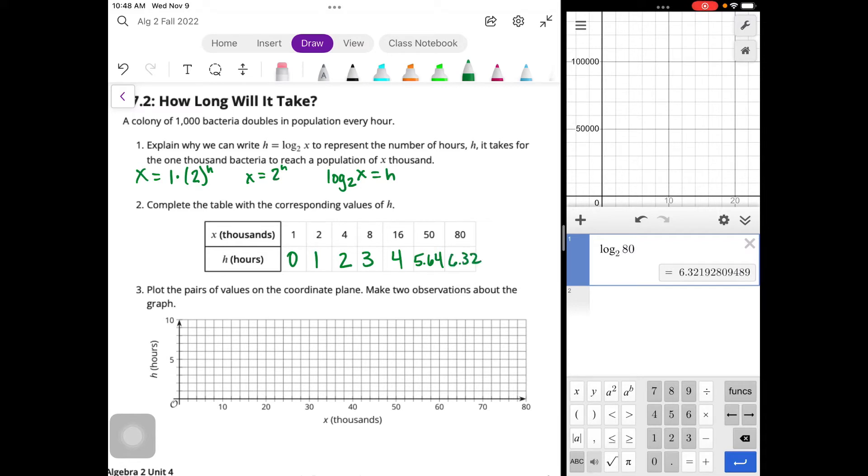So because the first 5 values for x were powers of 2, we got whole numbers for our hours. But then we started getting numbers that were not powers of 2, and so we got decimals for our number of hours. So now we're going to plot the pairs of values on the coordinate plane. Our x is the x-axis and our hours is the y-axis.